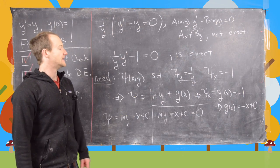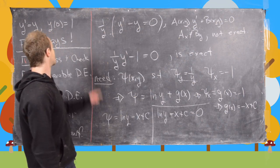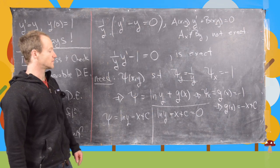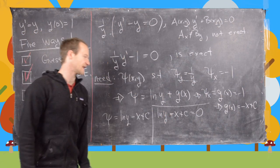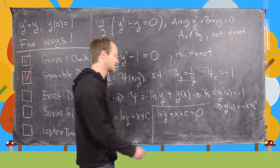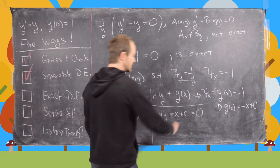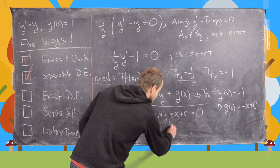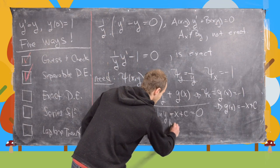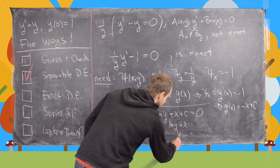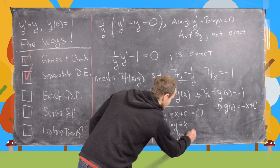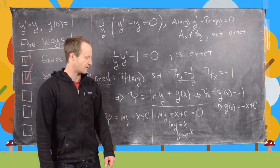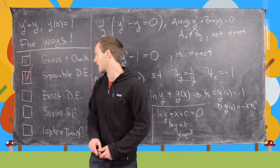Our implicit solution is of the form: natural log of y minus x plus a constant equals 0. Plugging in the initial condition y(0) equals 1 — the natural log of 1 is 0, x is 0 — we get c equals 0. So the natural log of y equals x, which tells us y equals e to the x, exactly as before.